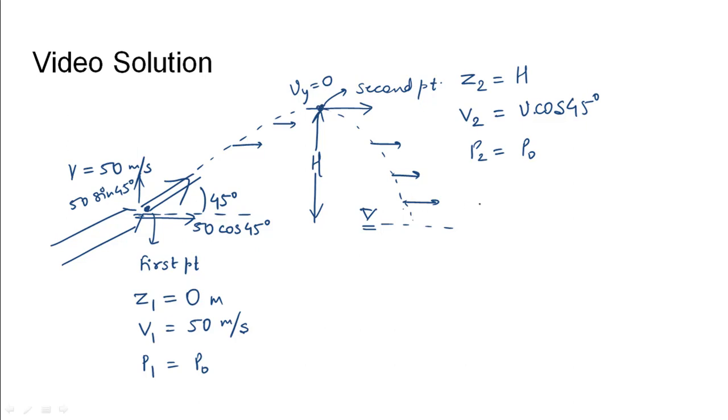So comparing these two using Bernoulli's equation, that is z1 plus p1 over rho g plus v1 squared over 2g is equal to z2 plus p2 over rho g plus v2 squared over 2g. We know that p1 and p2 are equal, so this term and this term will get cancelled out. z1 is 0, z2 is capital h.